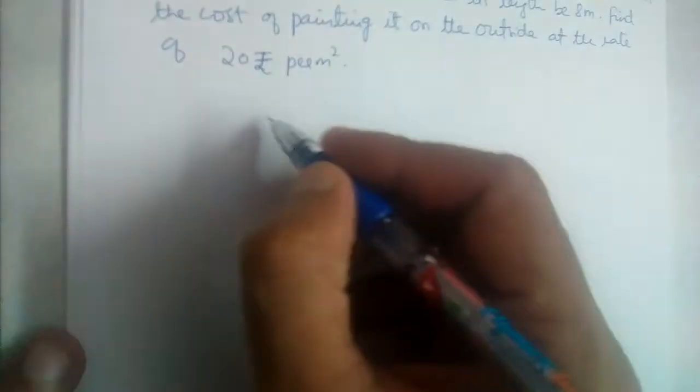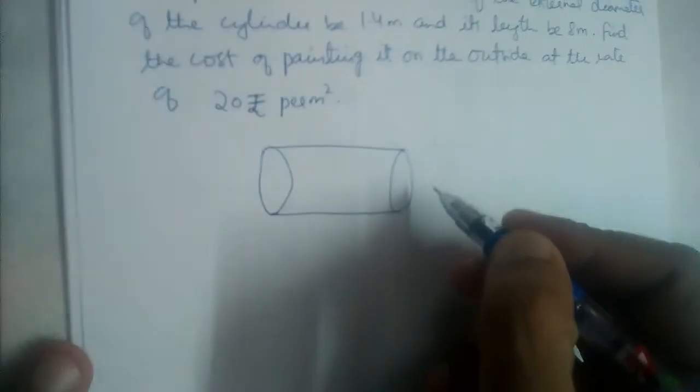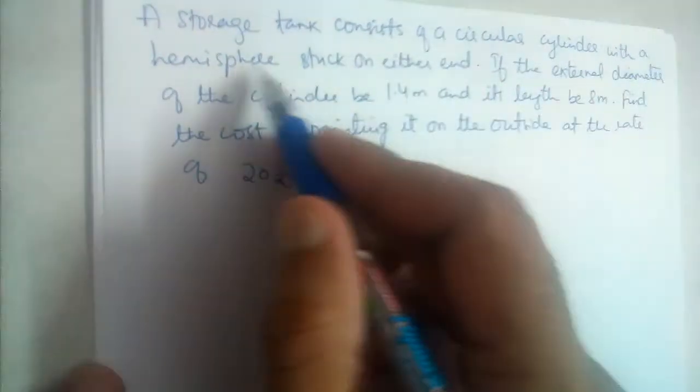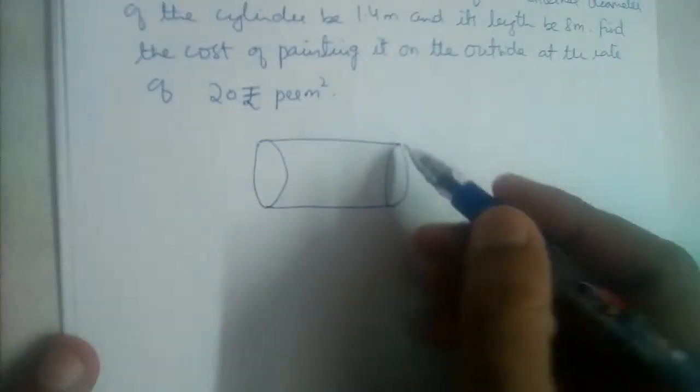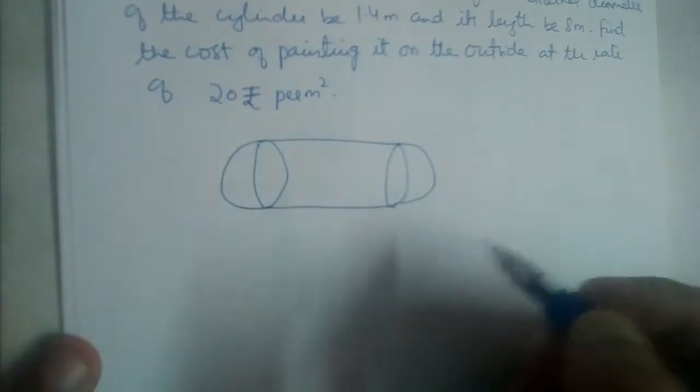So we have a cylinder, and it consists of a cylinder with a hemisphere stuck on either end. So on both the ends, we have hemispheres stuck to it, attached to it.